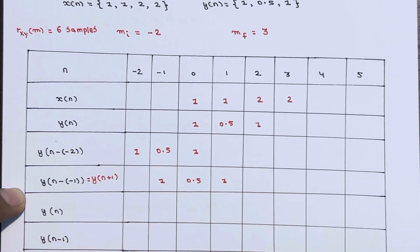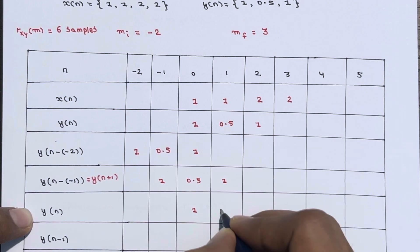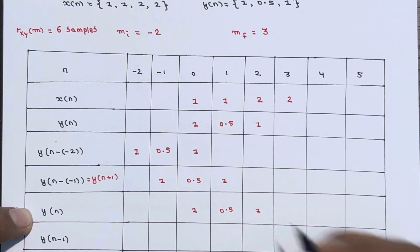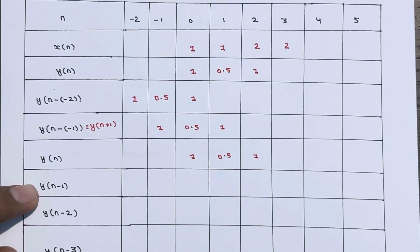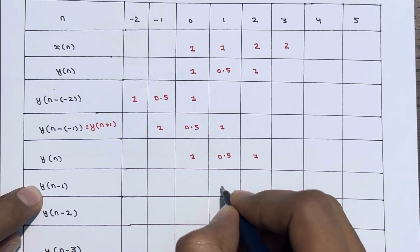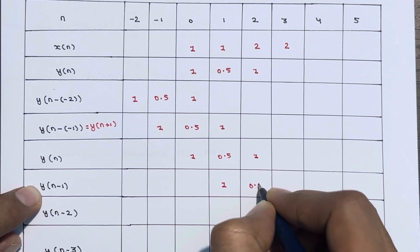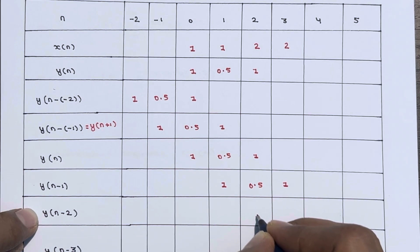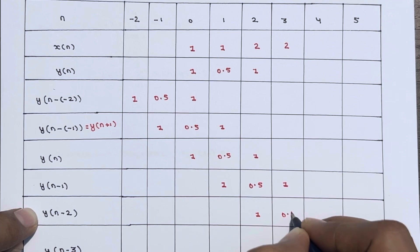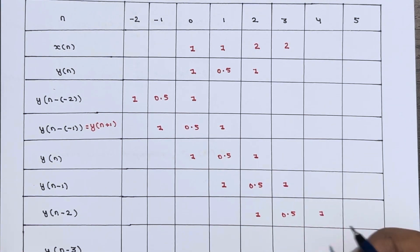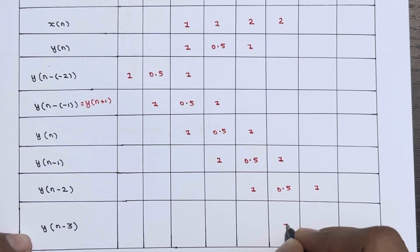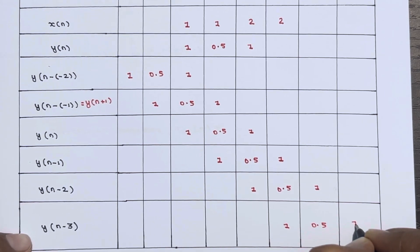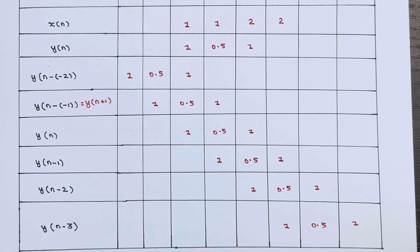For m = 0 we use y(n), one more unit to the right: one, zero point five, and one. For m = 1 we use y(n - 1), another unit right shift: one, zero point five, and one. For m = 2 use y(n - 2), shifted again: one, zero point five, and one. And for m = 3, y(n - 3), one more unit right shift: one, zero point five, and one.